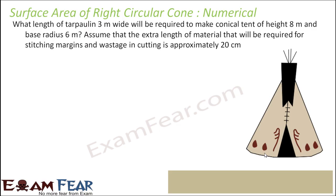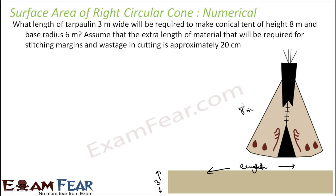What length of cloth 3 meters wide will be required to make a tent of height 8 meters and radius 6 meters? Assuming that the extra length of material required for stretching, margins, and wastage in cutting is approximately 20 centimeters.